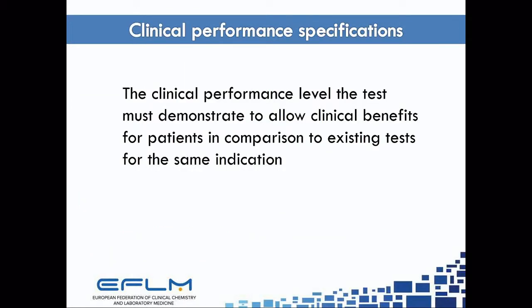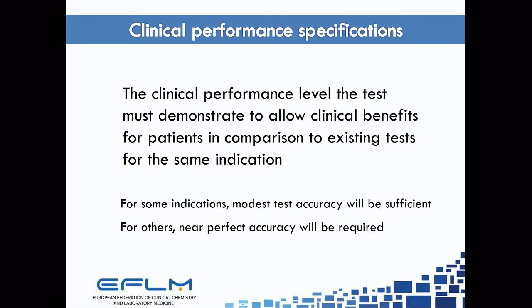That brings me to the definition of clinical performance specification. It's the clinical performance level the test must demonstrate to allow the possibility of clinical benefits for patients against state-of-the-art existing tests for the same indication. And it's not a one-size-fits-all. For some tests, modest test accuracy will be sufficient — there's an effective treatment and we have no or very poor existing tests. But for others, we'll need near-perfect accuracy, because the harms of misclassifications are so high that a new test introduced will need to be safe.